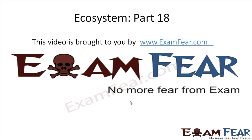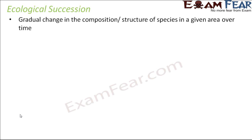Hello friends, this video on ecosystem part 18 is brought to you by examfew.com — no more fear from exam. Now that we have talked about ecological pyramids, we will talk about ecological succession. Succession is related to the word 'successor,' meaning something which comes after what is existing. It is a gradual change in the composition or structure of species in a given area over time, and since it is related to ecology, it is called ecological succession.